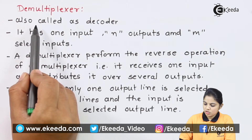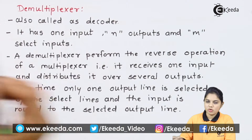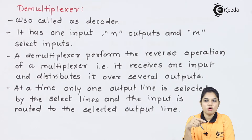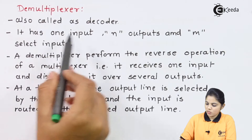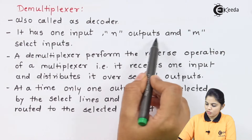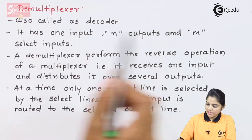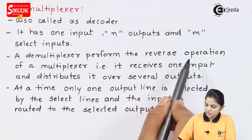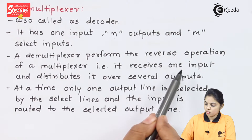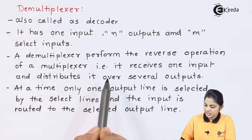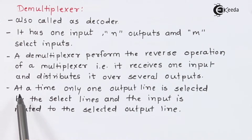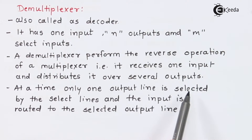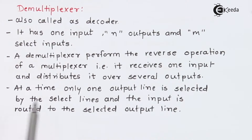D-multiplexer is also called a decoder because the one input will be connected to one of the different outputs according to the select line. It has one input, N outputs, and M select inputs. A D-multiplexer performs the reverse operation of a multiplexer — it receives one input and distributes it over several outputs. At a time only one output line is selected by the select lines and the input is routed to the selected output line.